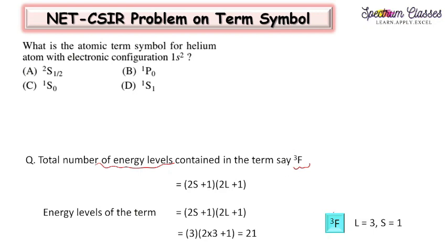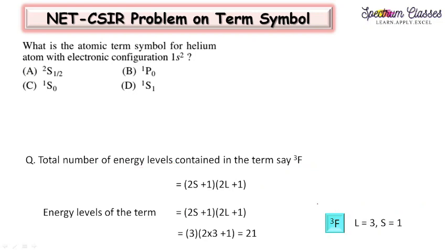So we need to calculate the total number of microstates for the ³F term. For ³F, L = 3 (from F) and from 2S+1 = 3, we get S = 1. From this term we have calculated the values of L and S. The multiplicity can be calculated by two different methods: one using the formula (2L+1)(2S+1), and the other using the 2J+1 method. Using L = 3 and S = 1, we get 21 as the number of energy levels.